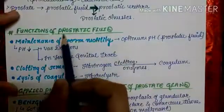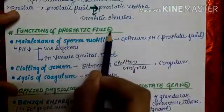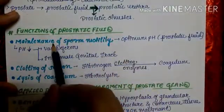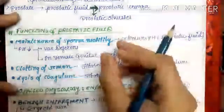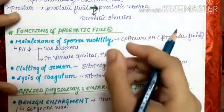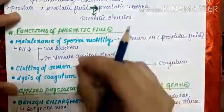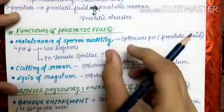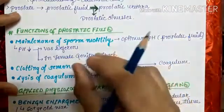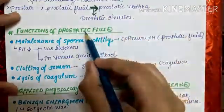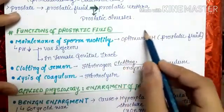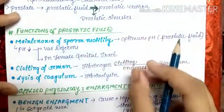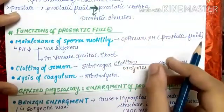Now let us study the functions of the prostatic fluid. The first function is maintenance of sperm motility. If the pH is less than 6, the sperm is immotile — their motility is lost. The prostatic fluid keeps an optimum pH, and therefore the sperms remain motile.